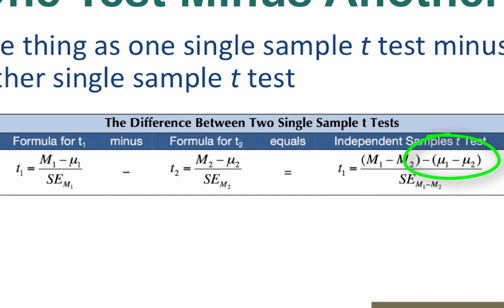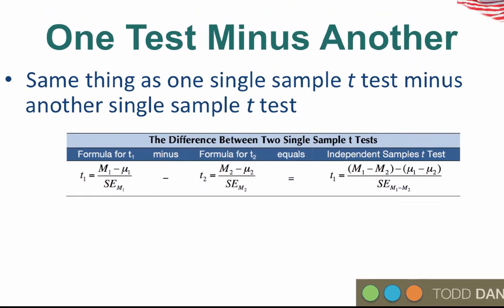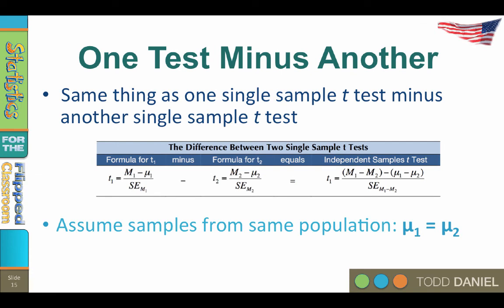Now where are we going to get the values for mu 1 and mu 2? To answer that, let's return to our null hypothesis. The null hypothesis for an independent samples t-test states that the two samples are drawn from populations with the same mean. In our case, all of the sample participants were drawn from the same population. Therefore, both samples should have the same means. So mu 1 and mu 2 are equal.